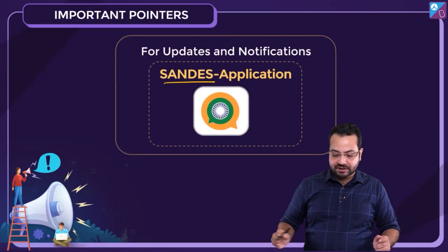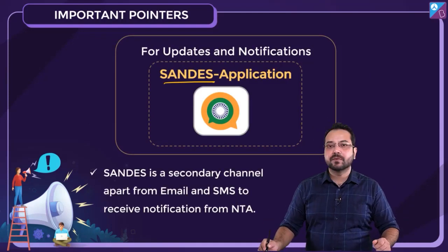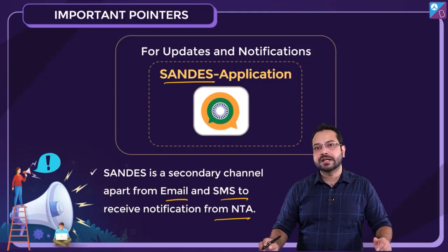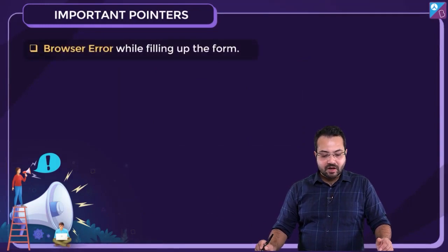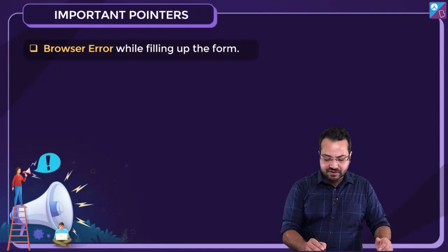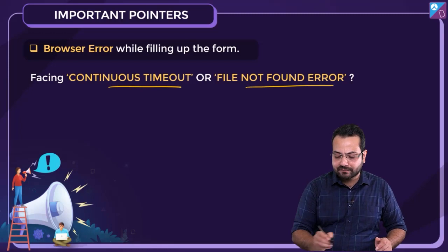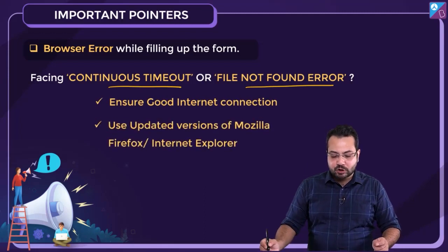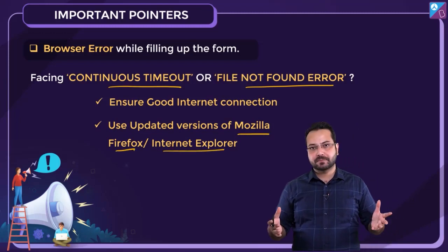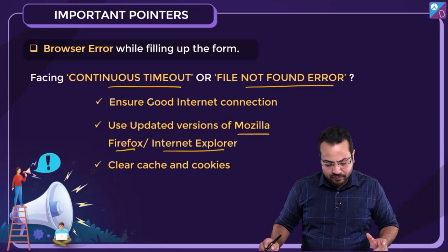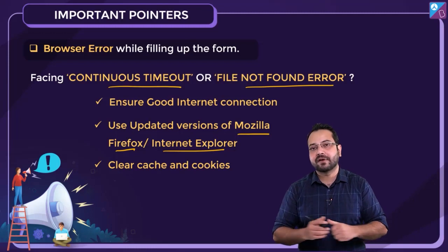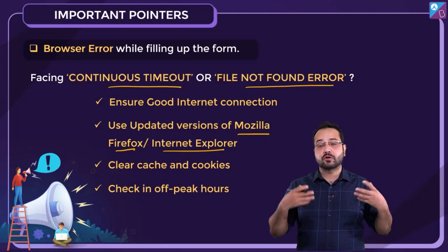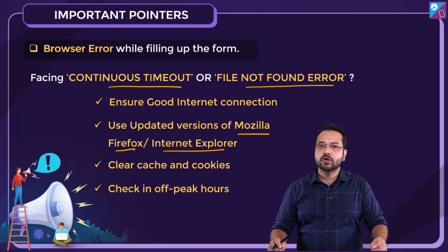For updates and notifications, you can download the Sundej app — this is a secondary channel of information apart from email and SMS from NTA. In case you get browser errors like continuous timeout or file not found while filling the form, ensure a good internet connection, use updated versions of Mozilla Firefox and Internet Explorer. Clearing cache and cookies may also help. You can also check during off-peak hours, as many people may be registering at the same time.